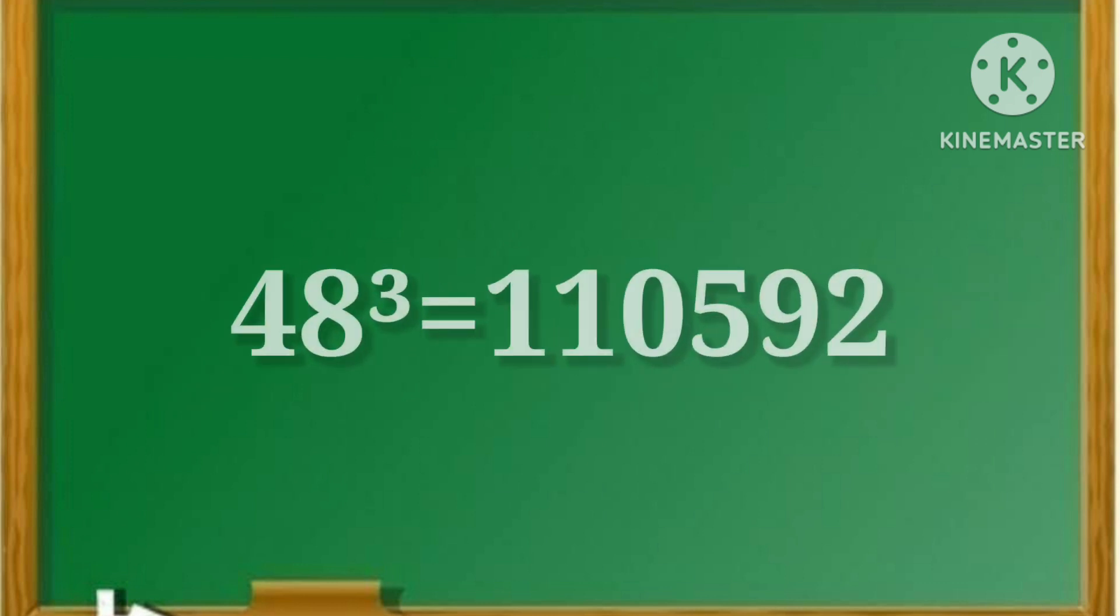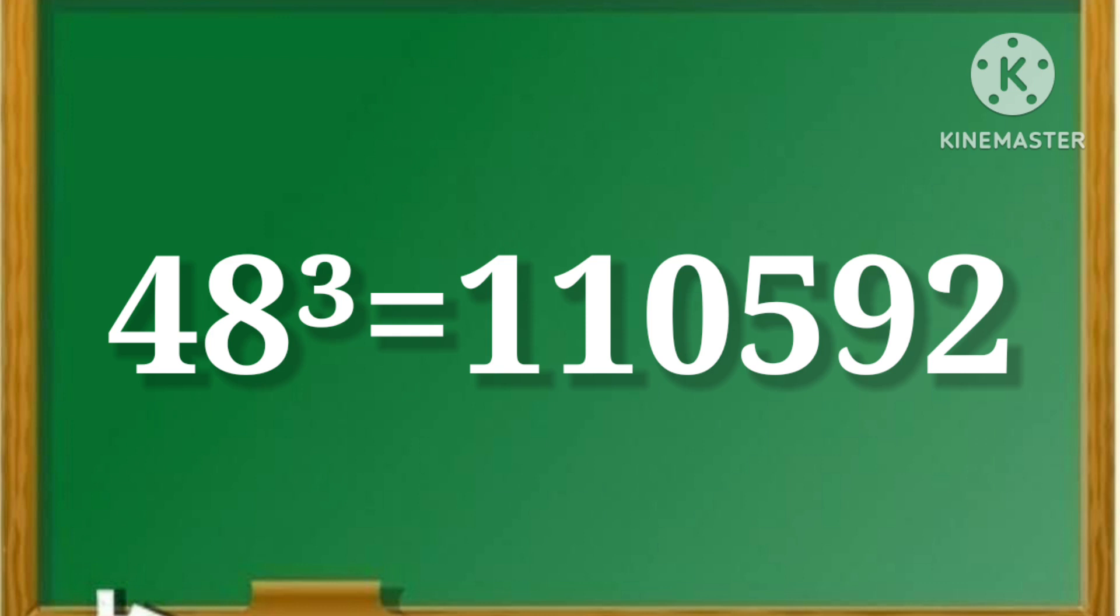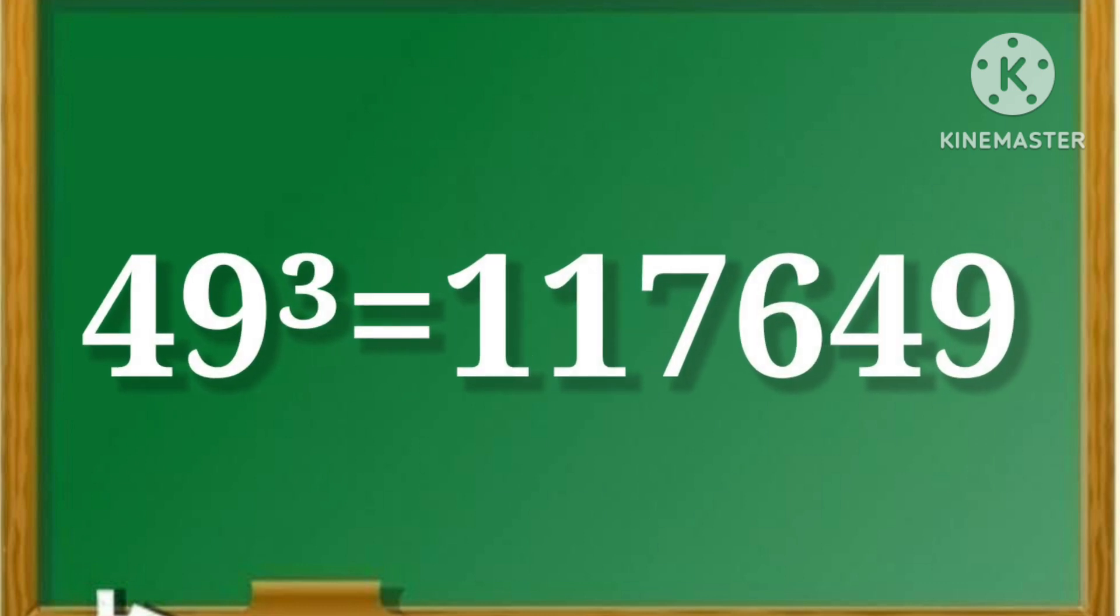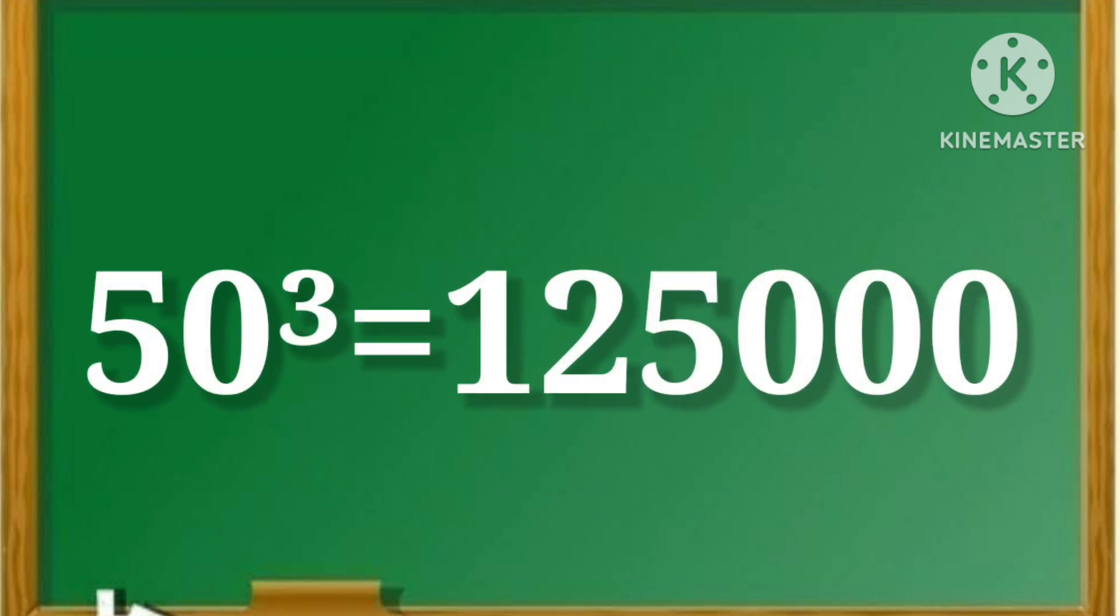48 cube is equal to 1,10,592. 49 cube is equal to 1,17,649. 50 cube is equal to 1,25,000.